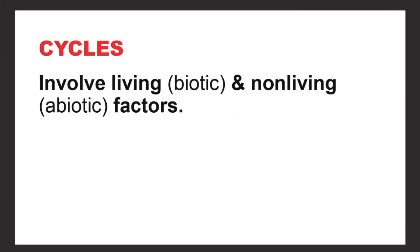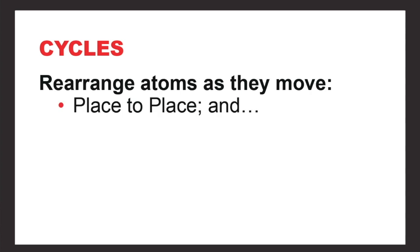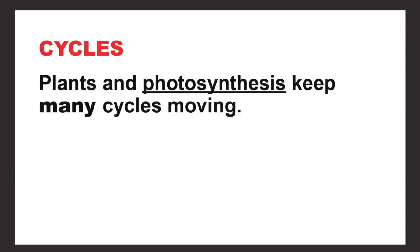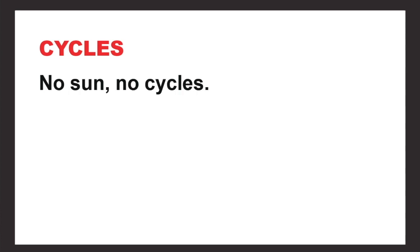Cycles involve living and non-living abiotic factors. Atoms get rearranged as they move from place to place and organism to organism. Plants and photosynthesis keep many cycles moving — essentially, if there's no sun, there are no cycles.